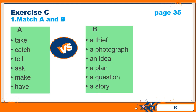Now come to exercise C. This is on page 35 of your Oxford Reading Circle. Its part 1 is to match column A with column B. In column A, 6 words are given: take, catch, tell, ask, make, have. If you notice, you will see that all these are verbs. Against these verbs, 6 words are given in column B: a thief, a photograph, an idea, a plan, a question, a story. Now you will look at both the columns carefully and try to find out which verb matches with what noun.